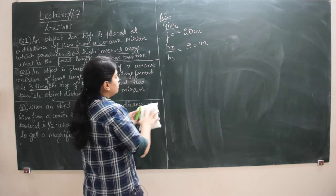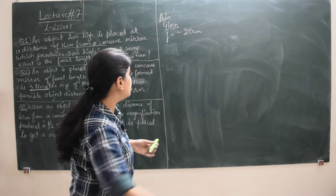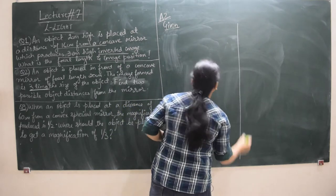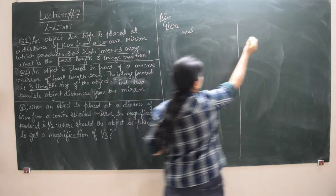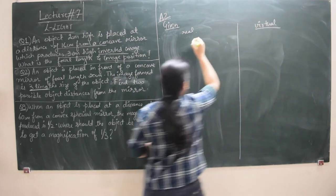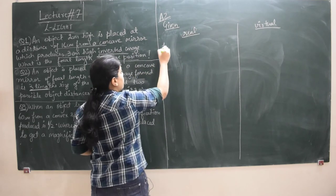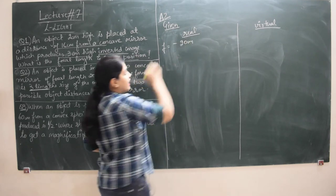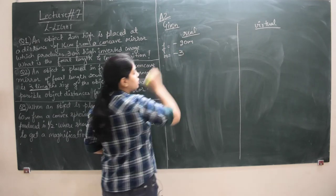So focal length F is minus 20. Let's do it for two cases separately. For the real image case, magnification is negative, so M is minus 3. For the virtual image case, focal length is still minus 20 — focal length of a mirror never changes — but because we are talking about a virtual image, magnification here will be plus 3. Magnification has no units.